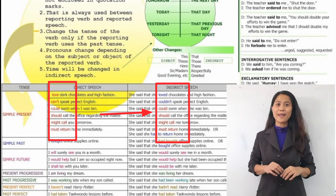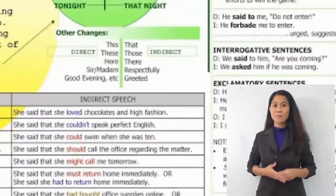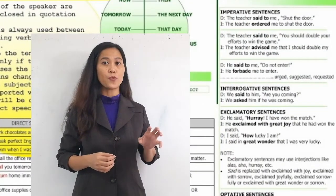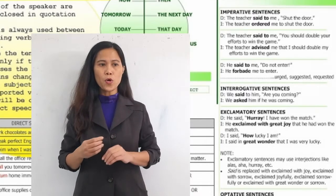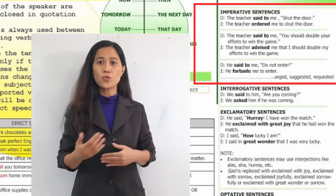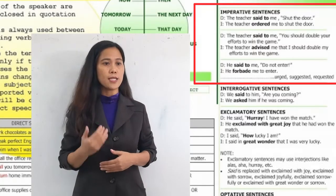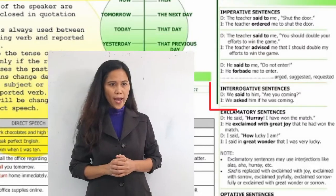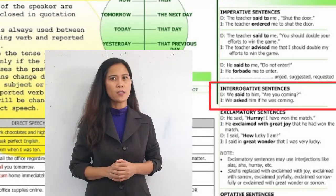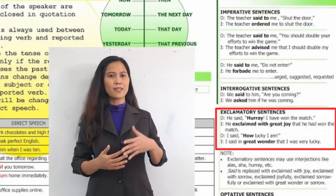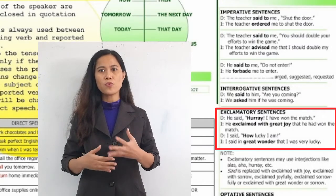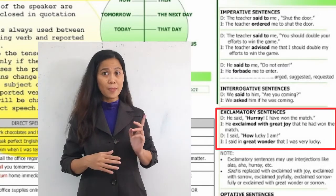You can click the link in the description to go to my blog where you can get a copy of this matrix. Now, the matrix covers declarative statements, but there are other forms. Imperatives ask you to do something — like 'Shut the door.' We also have interrogative sentences, which are questions. Then we have exclamatory sentences, which express deep emotions.